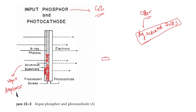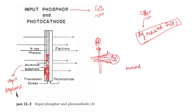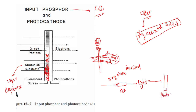Because the CsI crystals are perpendicular to the aluminum substrate, there is minimal lateral light diffusion. These needle-shaped crystals absorb the X-ray photon and produce light. The CsI crystals absorb the X-ray photon, produce light, and this light is transmitted to the photocathode.